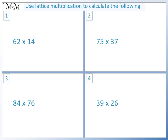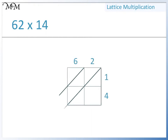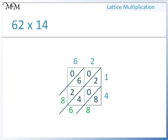Question 1: 62 times 14. 6 times 1 equals 6. 2 times 1 equals 2. 6 times 4 equals 24. 2 times 4 equals 8. Here we have 8. 4 plus 2 equals 6. 2 plus 6 equals 8. And here we have 0. We have 0, then 8, 6, and 8. So 62 times 14 equals 868.